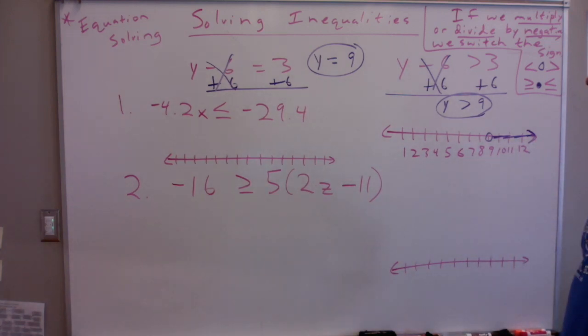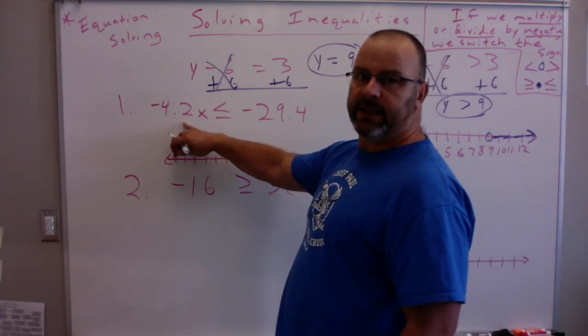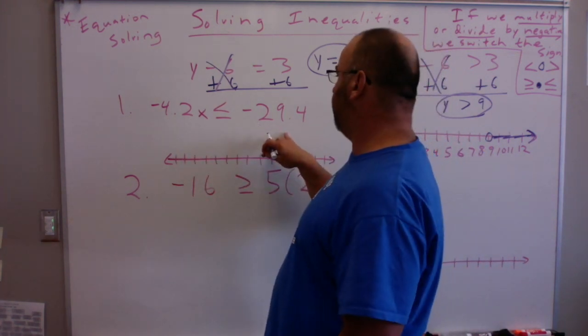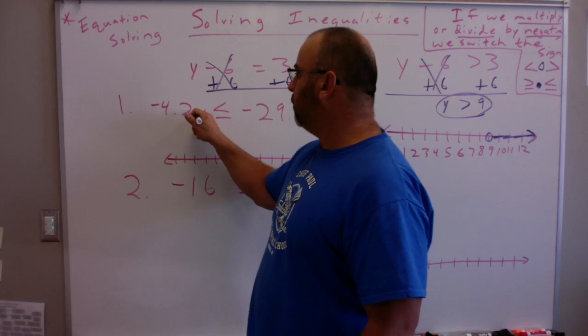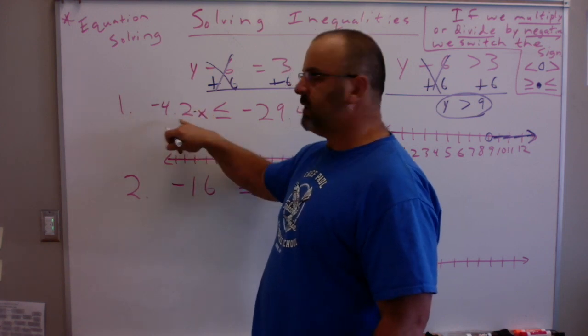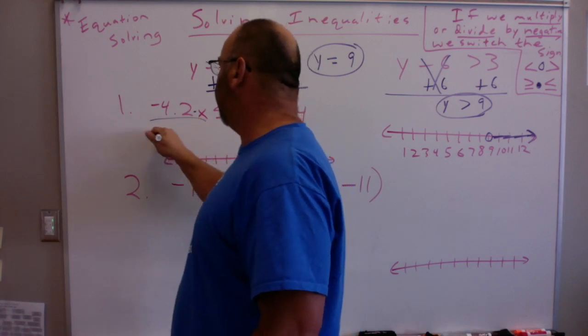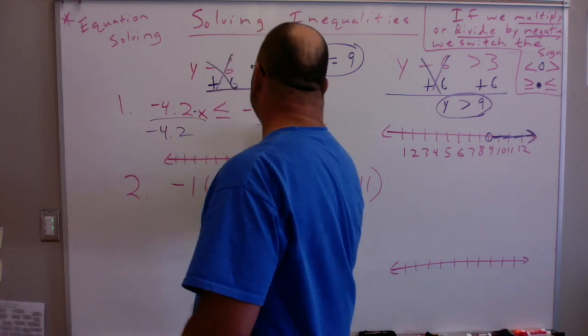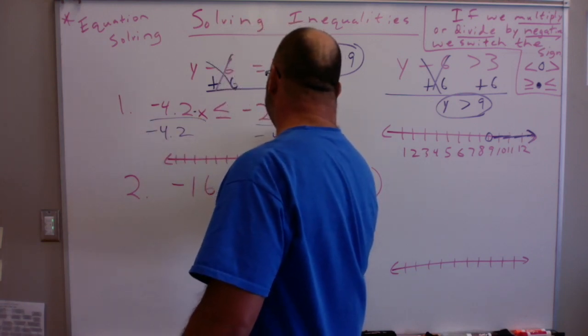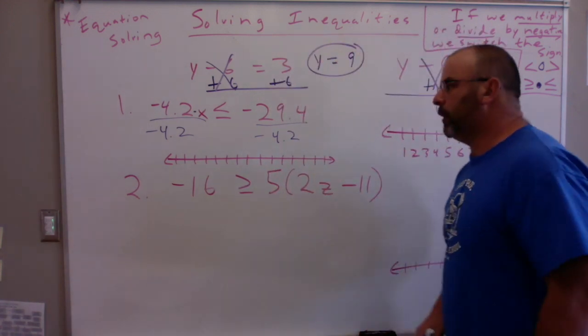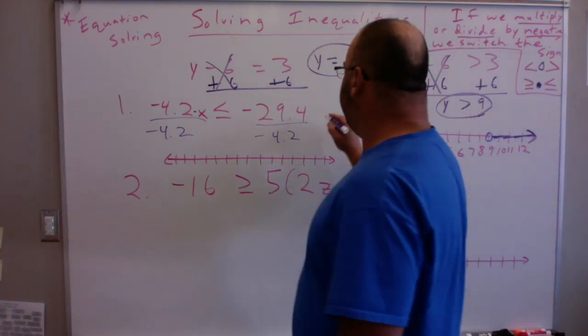So let's take a look at two examples. Negative 4.2x is less than or equal to negative 29.4. So I'm multiplying here. So what's the opposite of multiplying by negative 4.2? Dividing by negative 4.2. I'm going to do that on both sides. When I do that, I divide by negative 4.2, I get x.